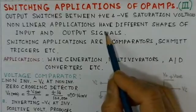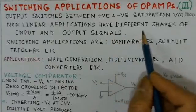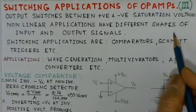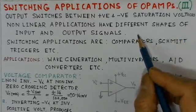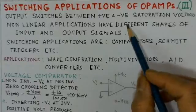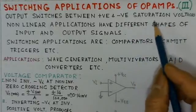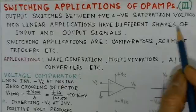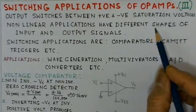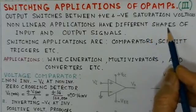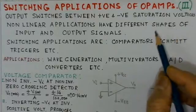As we have already talked about, the shapes of the input and output signals are different. Even in the case of switching applications, the input and output wave shapes are different, so they also come under the category of nonlinear applications of operational amplifiers.